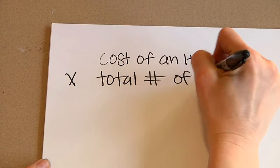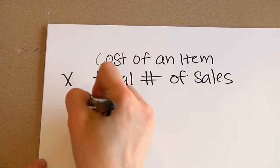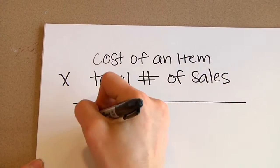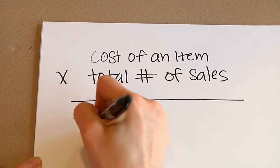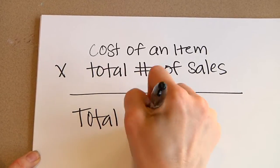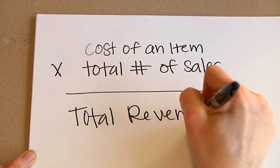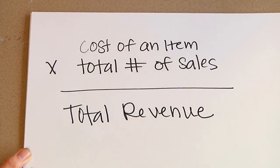Total revenue is very simple. Multiply the total number of items you sell by the cost you sell them for in order to get the total revenue you'll get from selling those items.